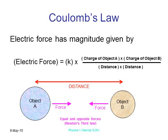Coulomb's Law is just like the law of gravity. With gravity there was a gravitational constant multiplied by the mass of object one times the mass of object two, all over the distance squared. Coulomb's Law is the same formula but for electrical force: you have a constant k, and instead of masses you use the charges of objects A and B — charge of A times charge of B — still over the distance squared.